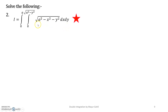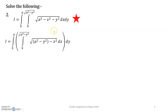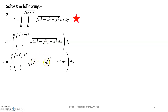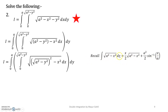We solve it in the standard way. Put the bracket around the innermost integral. The differential is dx, so x is the variable of integration. The term a² − y² is constant, so we collect it together. I write it as √(a² − y²) whole squared to use the formula for the integral of √(a² − x²).